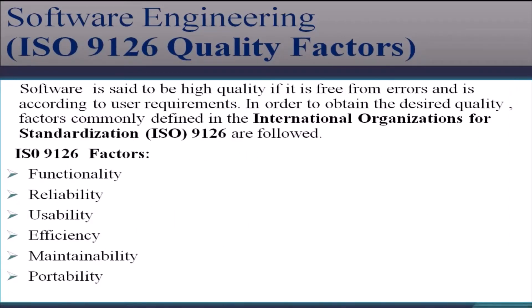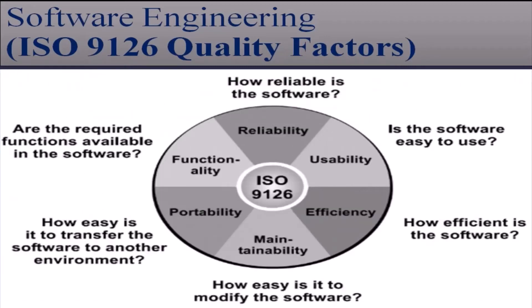Next, we will discuss about the ISO 9126 quality factors, or ISO 9126 quality model. Software is said to be of high quality if it is free from errors and is according to the user requirements. In order to obtain the desired quality, factors commonly defined in the International Organization for Standardization — ISO 9126 — are followed. The ISO 9126 factors include functionality, reliability, usability, efficiency, maintainability, and portability. These six factors are described in the ISO 9126 document and are shown in this figure.